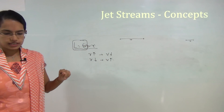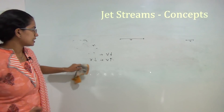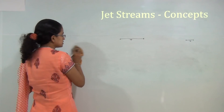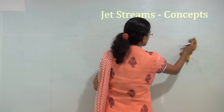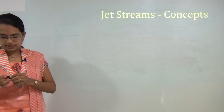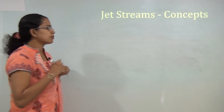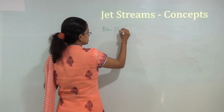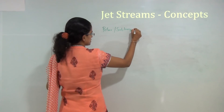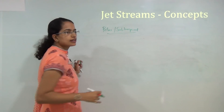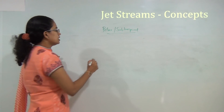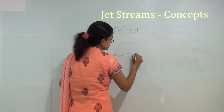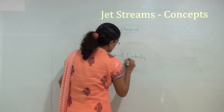Jet stream formation can be understood under two basic criteria: first, the polar and the subtropical jet streams, and second, the tropical easterly jet streams. The polar, subtropical, and mid-latitude jet streams have a similar formation mechanism, while tropical easterly jet streams have a separate formation mechanism. We will understand both of these now.